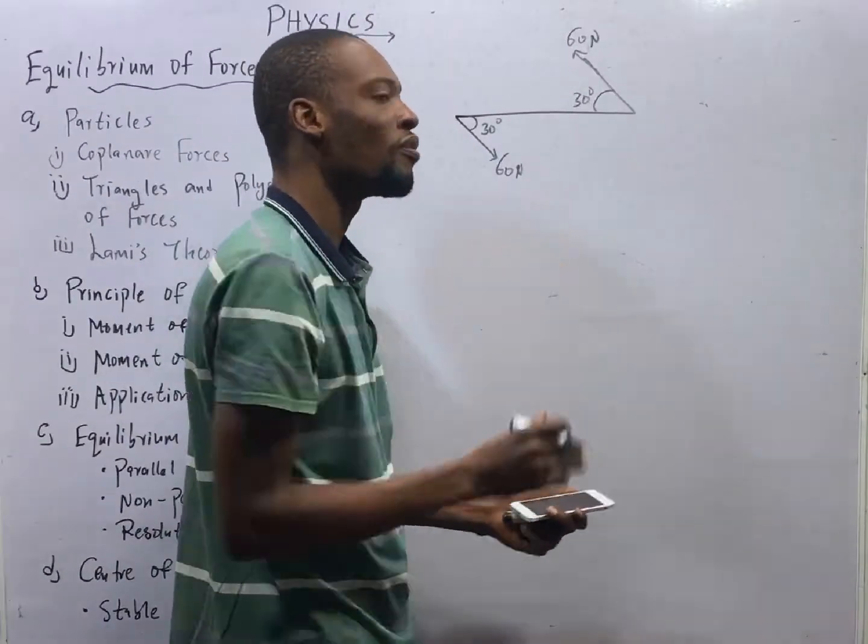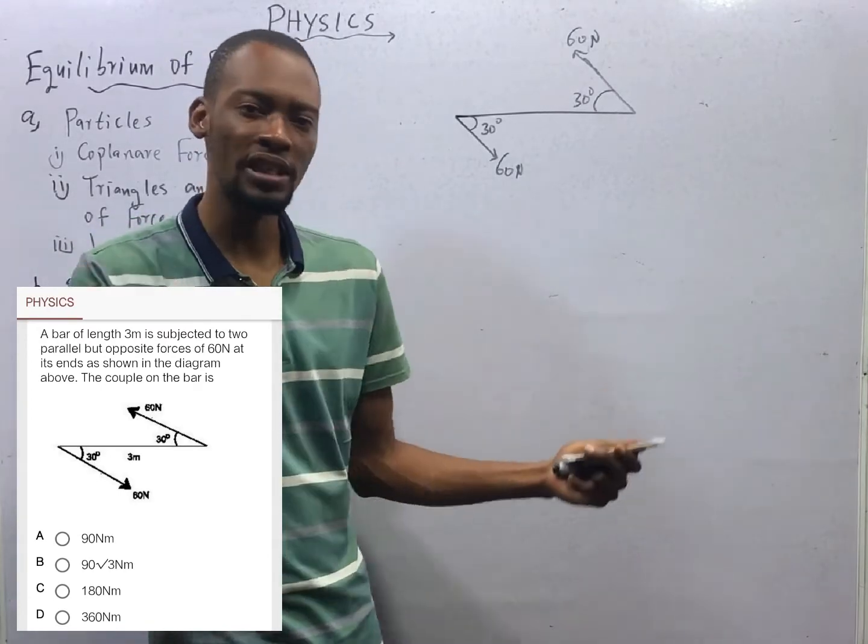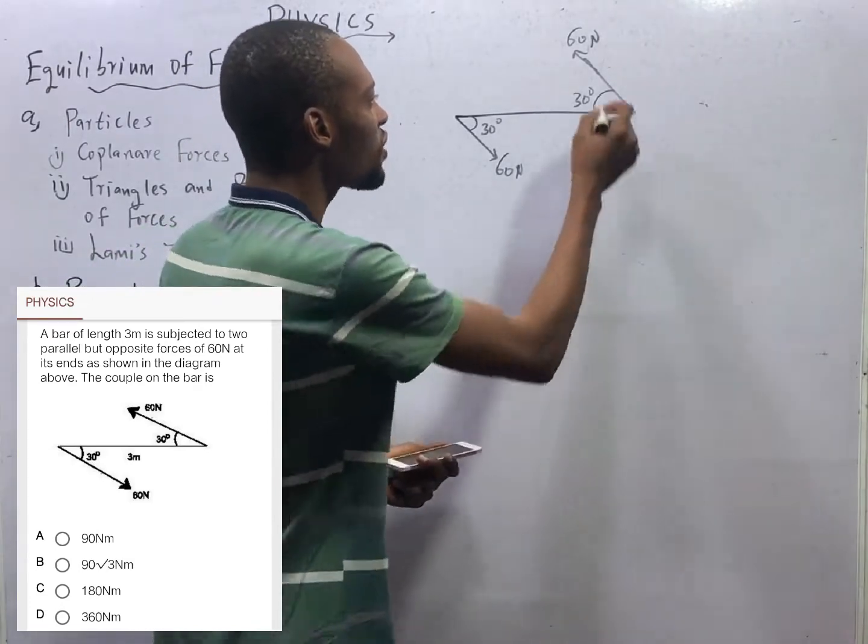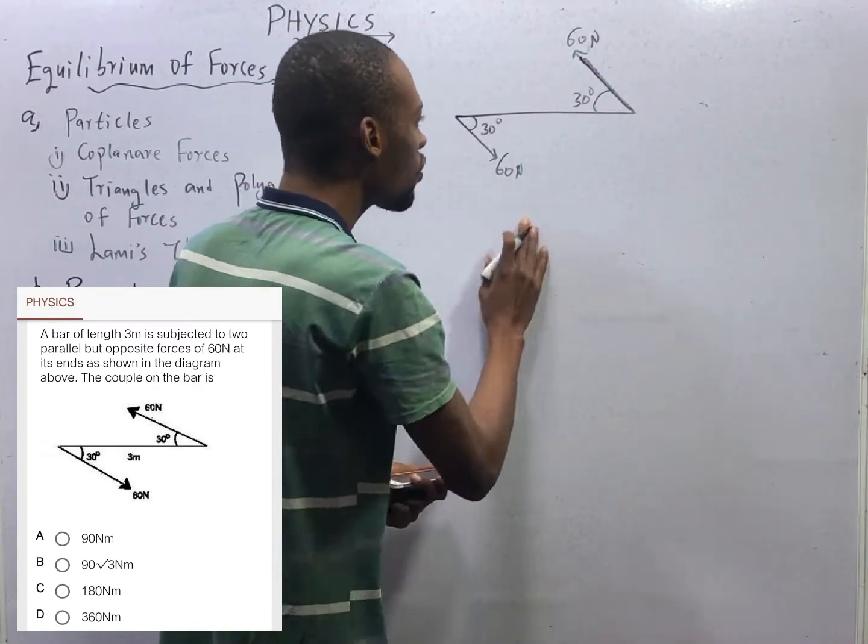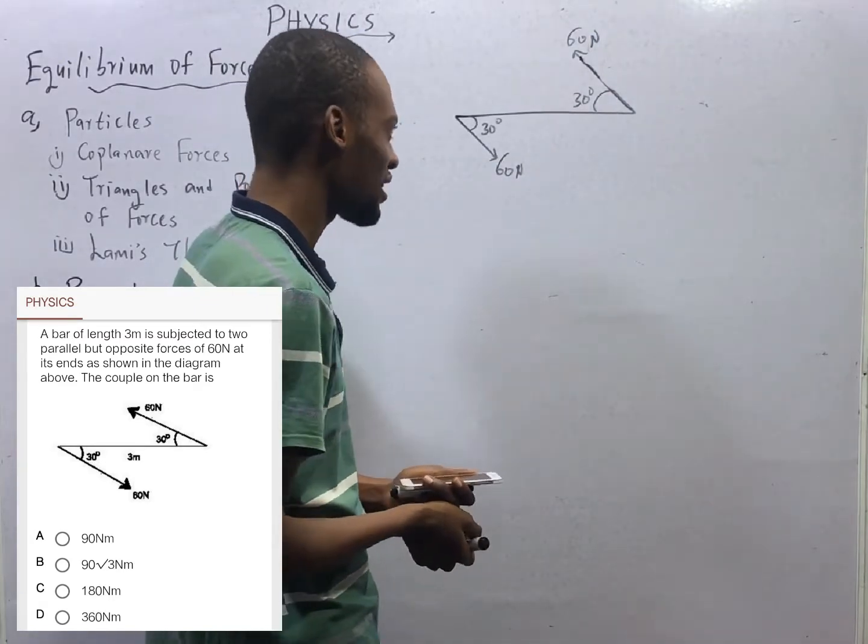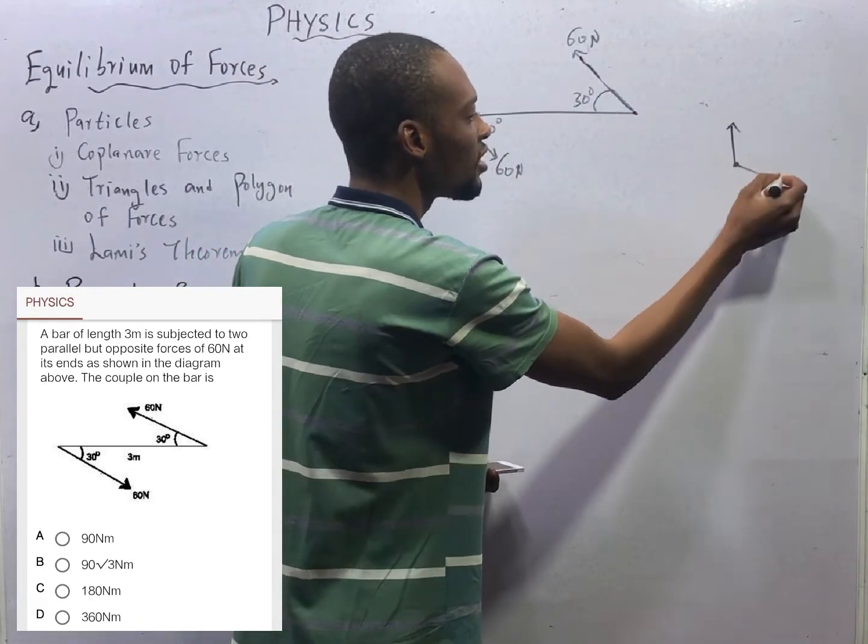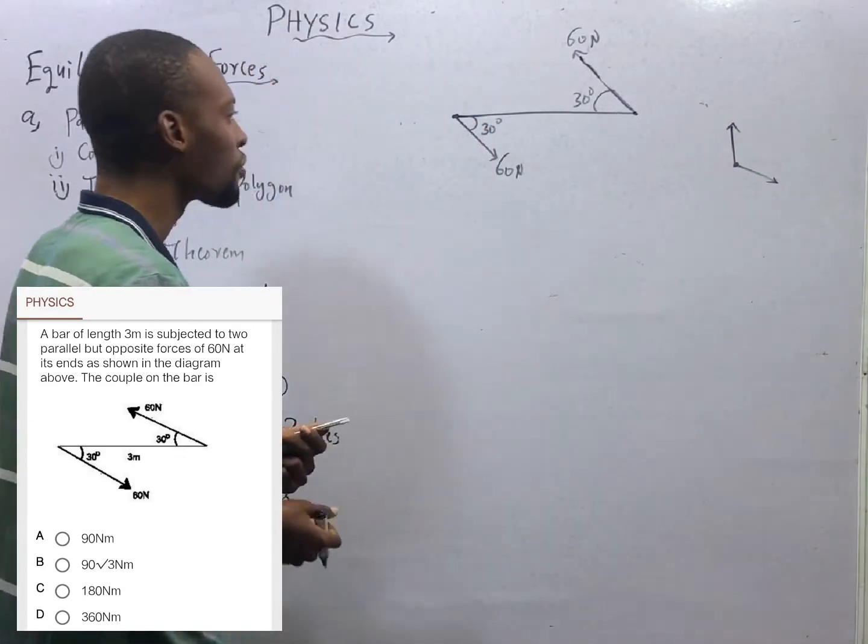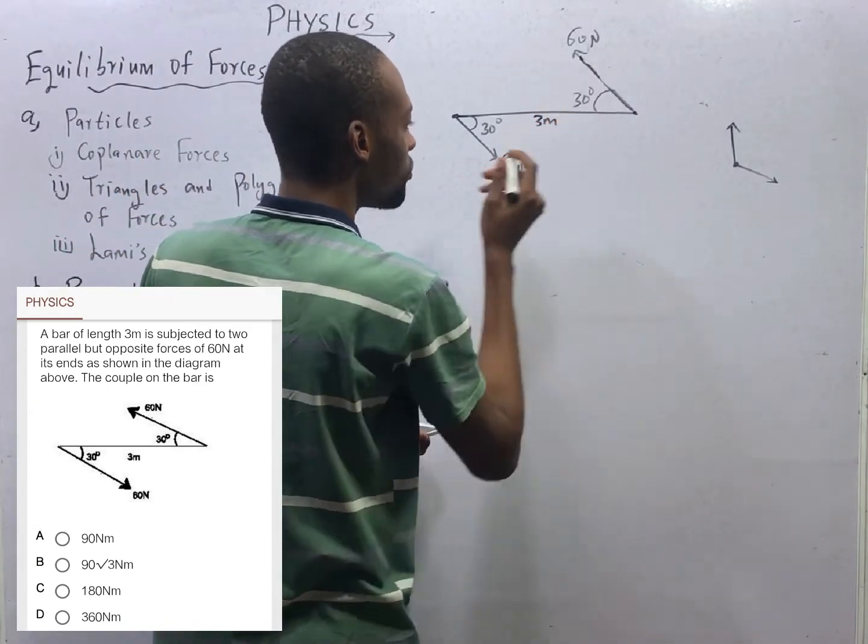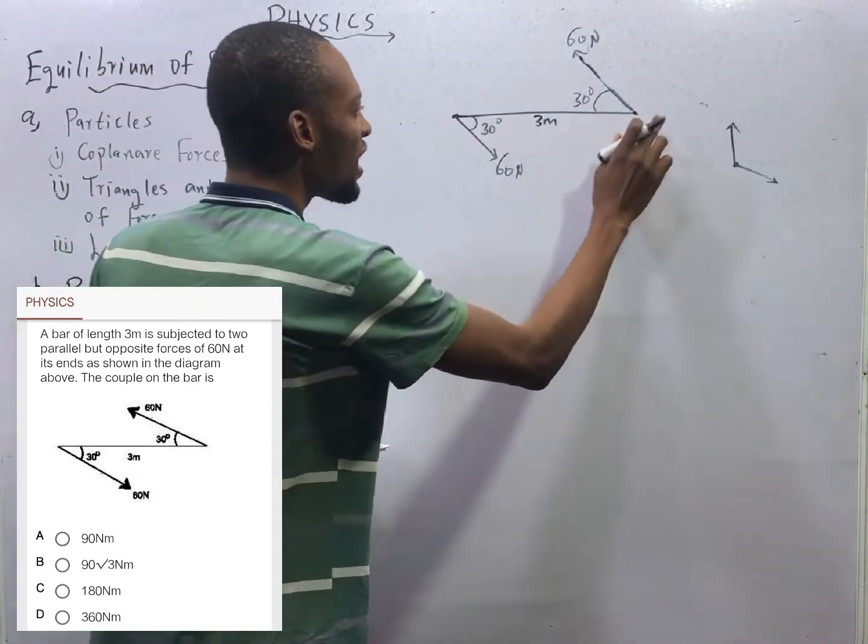Question 2. We are given this couple. Couples are equal and opposite forces acting in opposite direction. Their line of action do not intersect. Which means this force is acting here, this force is acting here. They are equal, they are opposite, they are acting in opposite direction. Their line of action do not intersect. Now, this force is inclined and this force is inclined. The distance is 3 meters.